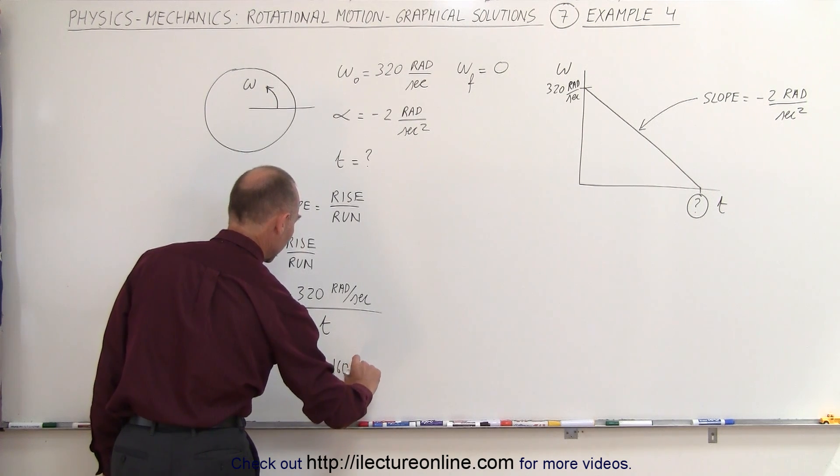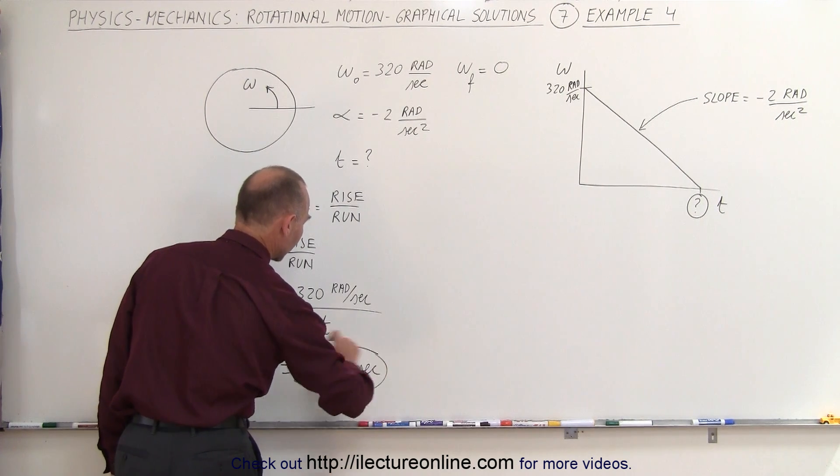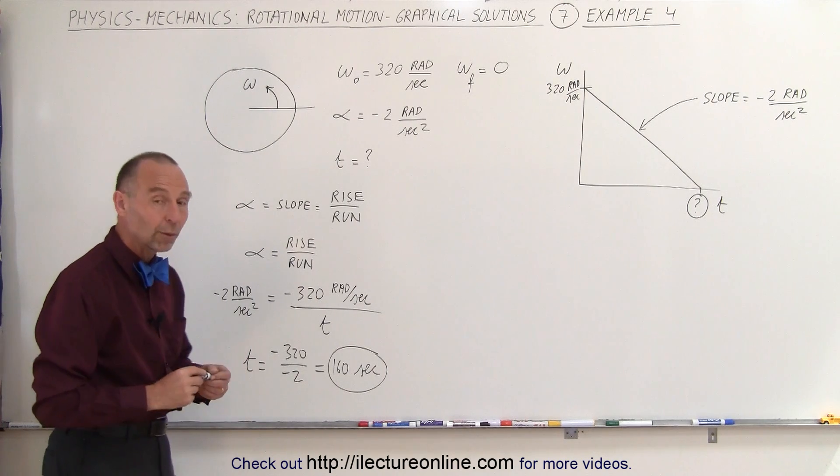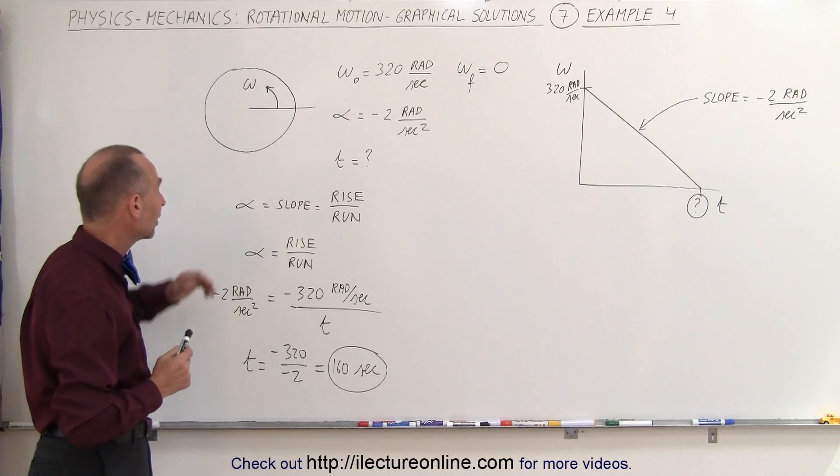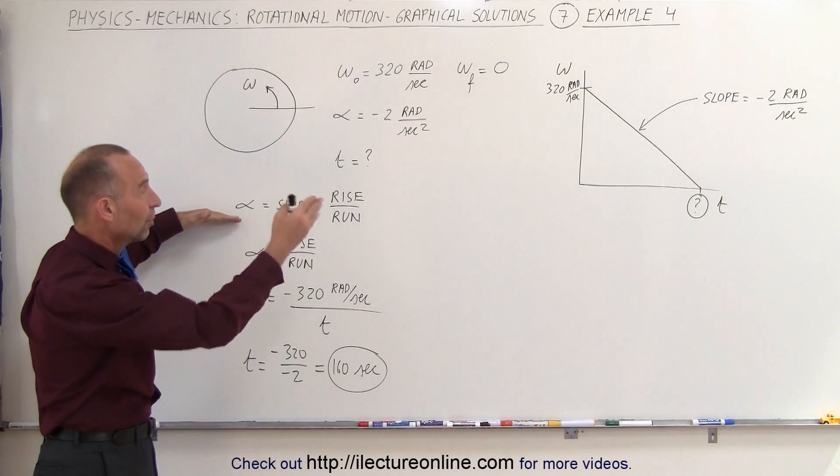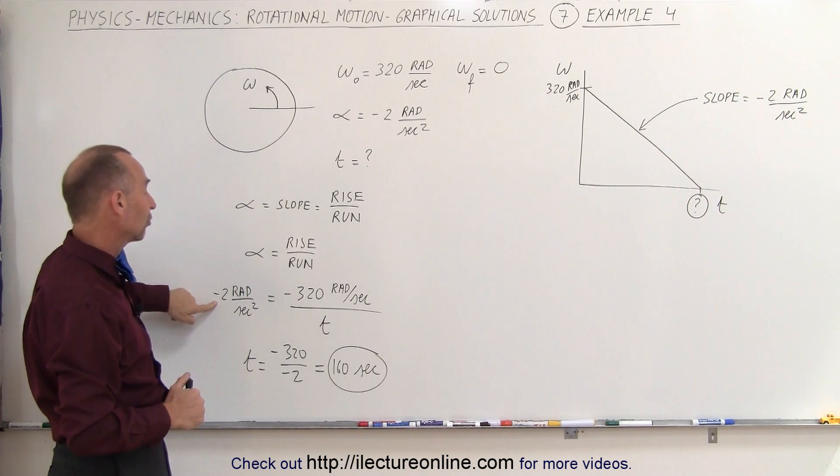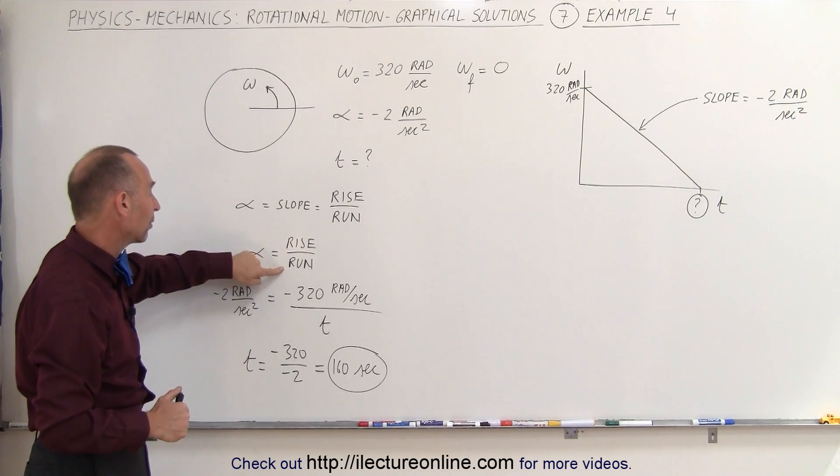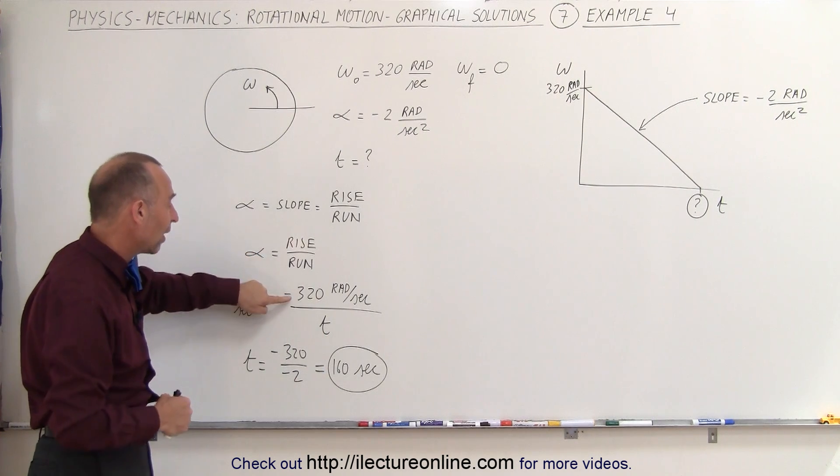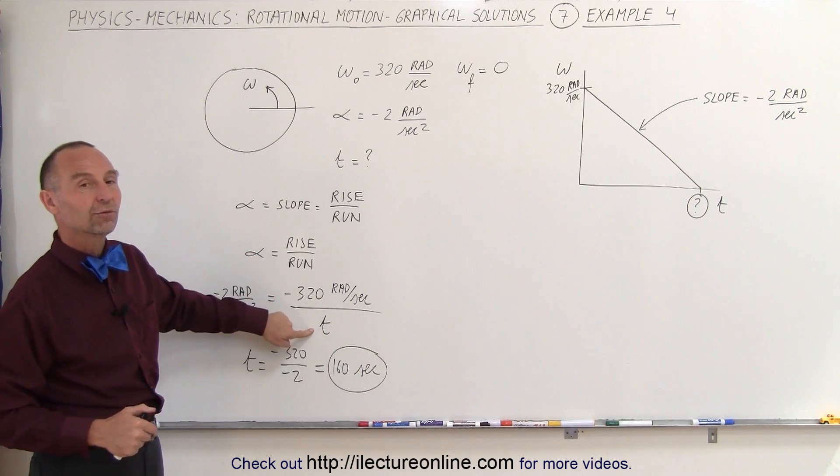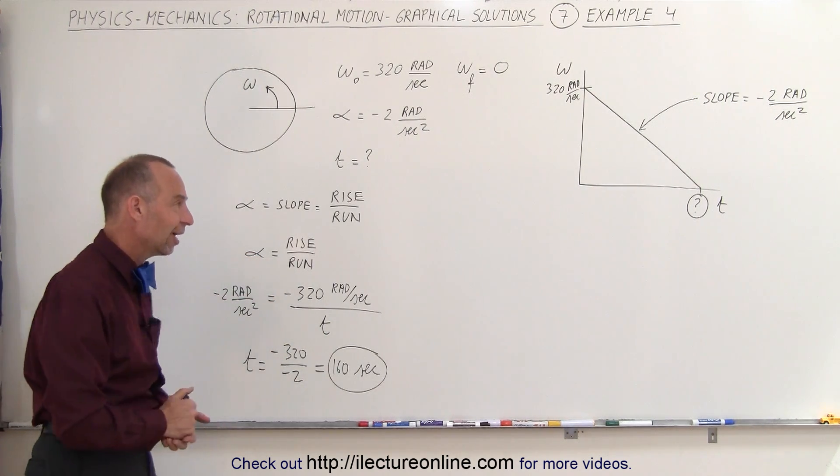So that's how simple it is when we use graphical techniques. We simply realize that alpha represents the slope on the graph, it is minus 2 radians per second squared, and the slope is the rise divided by the run. In this case it's a negative rise, and the run is what we're looking for, the time, and that's how it's done.